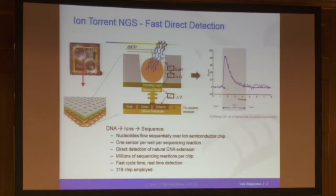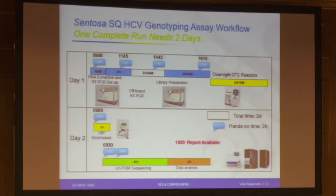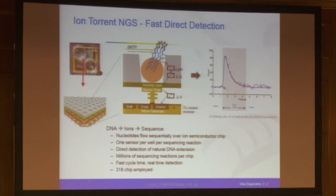Very briefly, you may have attended the plenary session yesterday where we had an excellent talk about technologies and next generation sequencing, so I'm not going into much detail here. Sufficient to say that we are using ion torrent technology originally developed by Life Technologies, and we have licensed that technology. Basically, we're measuring protons released by binding events in the DNA or RNA. pH changes are recorded and translated into sequence information. The main technology part is the 318 chip from Life Technologies, used throughout all our assays in infectious diseases and oncology.